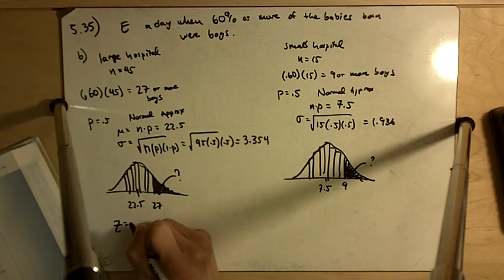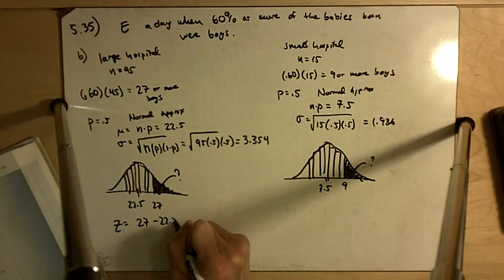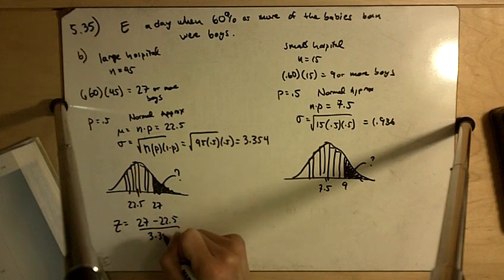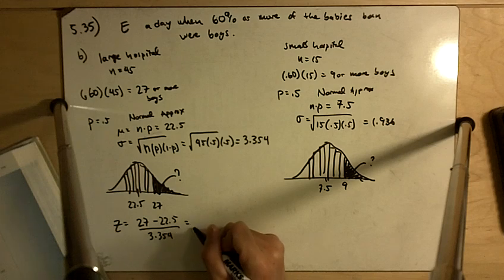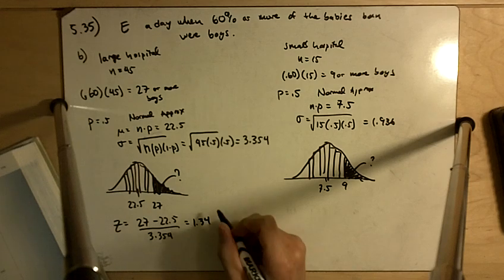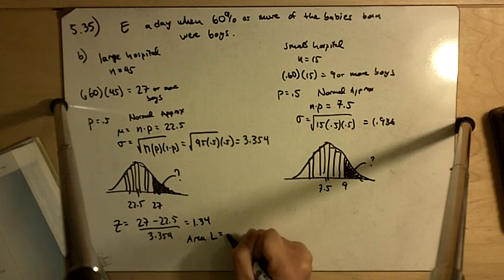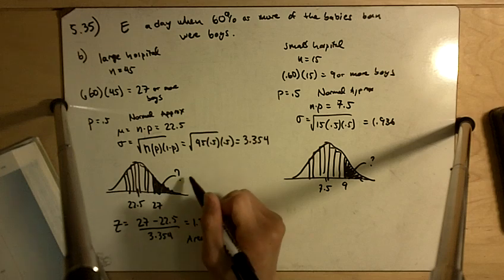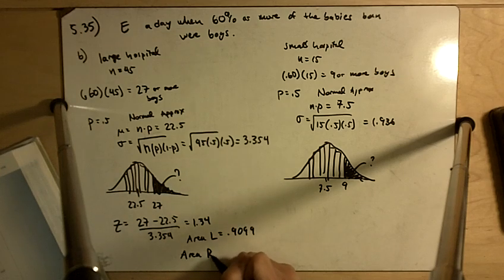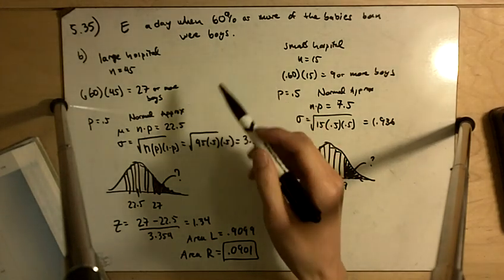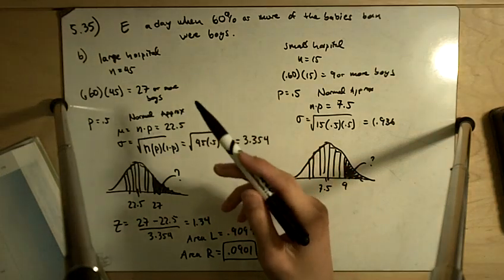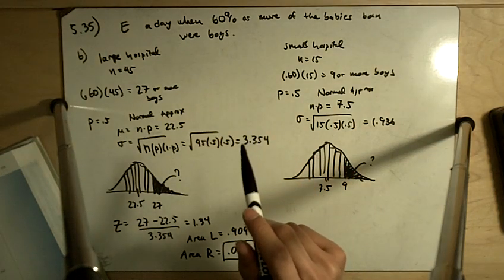So here our Z is equal to 27 minus 22.5 divided by 3.354. So here we're not using the continuity correction, and we get 1.34. And the area to the left is 0.9099. And so the area to the right is going to be 0.0901. So that's the probability of the large hospital having a day with 60% or more boys.